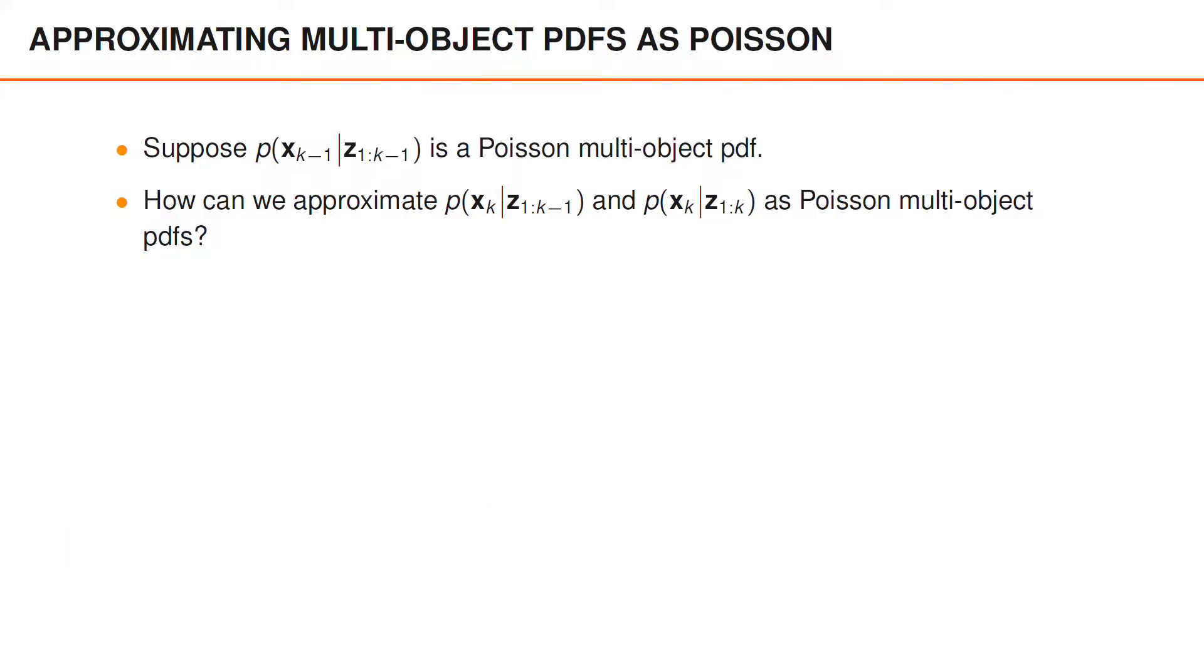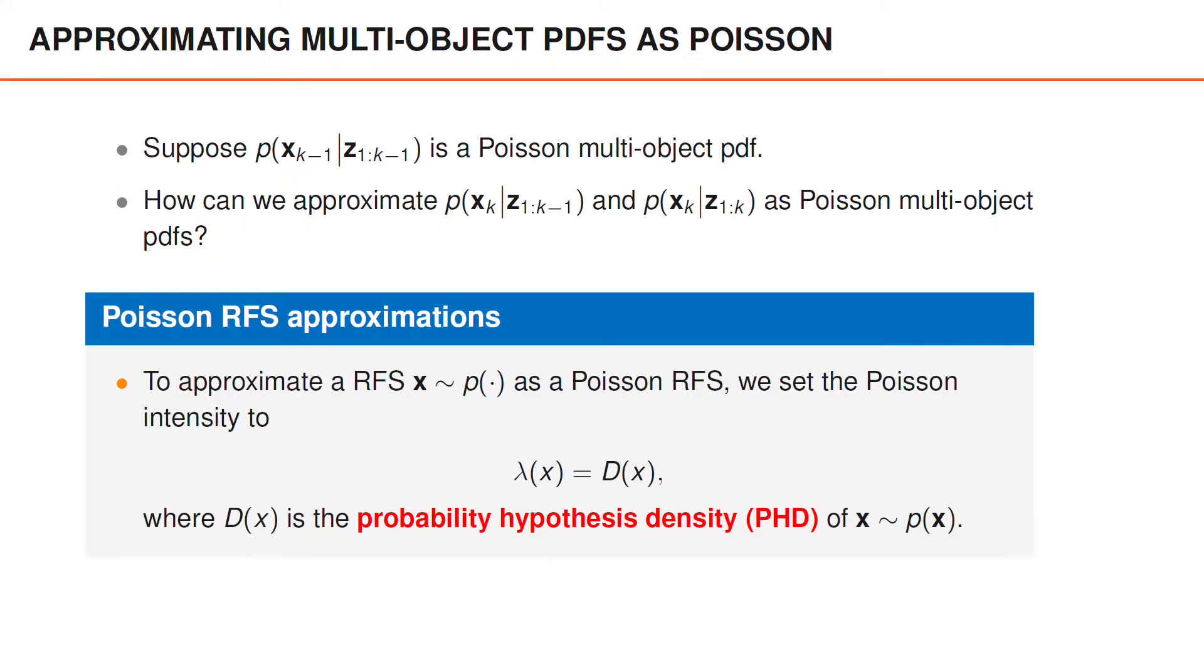When developing the PHD filter, we are facing the following question. Suppose the posterior at time k-1 is a Poisson point process distribution. How can we then approximate the predicted and updated distributions as Poisson point process distributions? The principle that we will follow is that whenever we want to approximate a random finite set distribution as a Poisson point process distribution, we set the intensity function of the Poisson point process to the probability hypothesis density, denoted D(x), of the original random finite set variable. The probability hypothesis density is abbreviated PHD, and we often use this as an acronym.